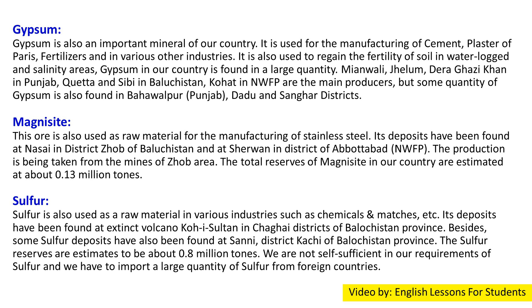Magnesite is also used as raw material for the manufacturing of stainless steel. Its deposits have been found at Nisai in district Zhob of Balochistan, and at Sherwan in district Abbottabad. Production is being taken from the mines of Zhob area. The total reserves of magnesite in our country are estimated at about 0.13 million tons.